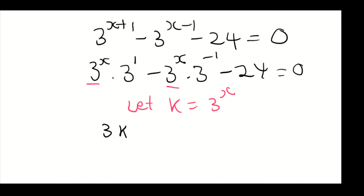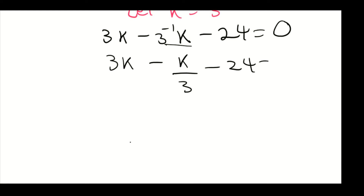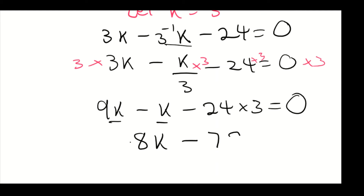Substituting k, we get 3k minus 3^(minus 1) times k minus 24 equals zero. Writing 3^(minus 1) as one third, we have 3k minus k over 3 minus 24 equals zero. We multiply through by 3, giving us 9k minus k minus 72 equals zero. So 8k minus 72 equals zero.